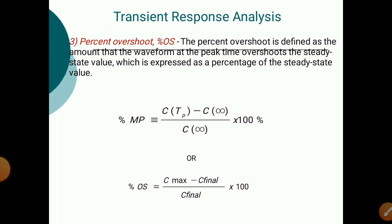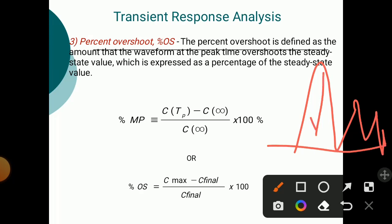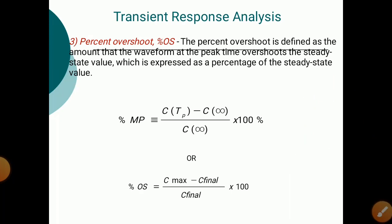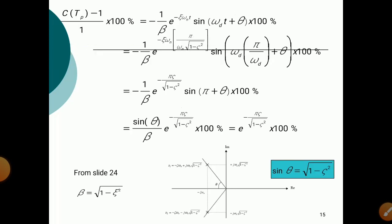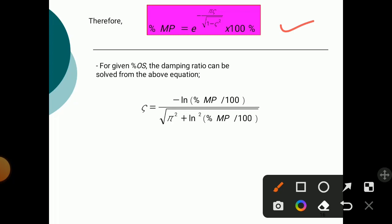Percentage overshoot is defined as the amount that the waveform at peak time overshoots the steady state value, expressed as a percentage of the steady state value. The formula is: %Mp = [C(tp) − C(∞)] / C(∞) × 100%, also written as (Cmax − Cfinal) / Cfinal × 100%. After solving, the result is: %Mp = e^(−πζ/√(1−ζ²)) × 100%. Note the negative sign in the exponent.